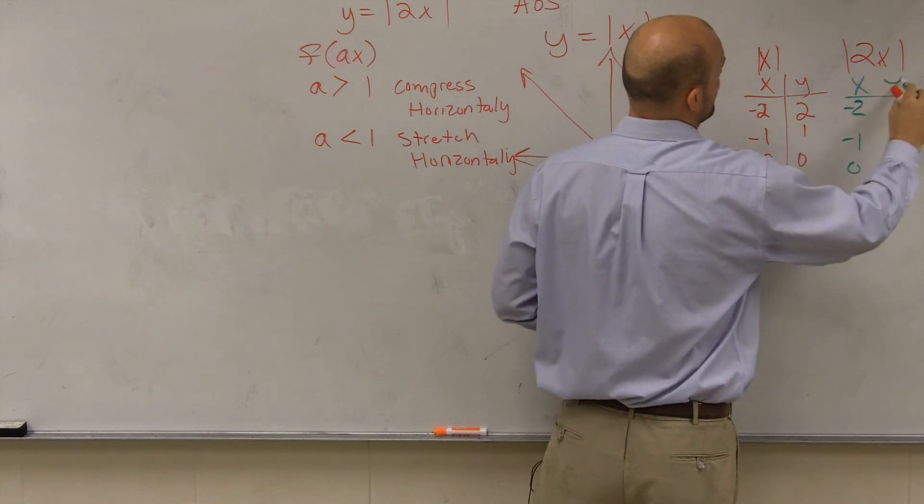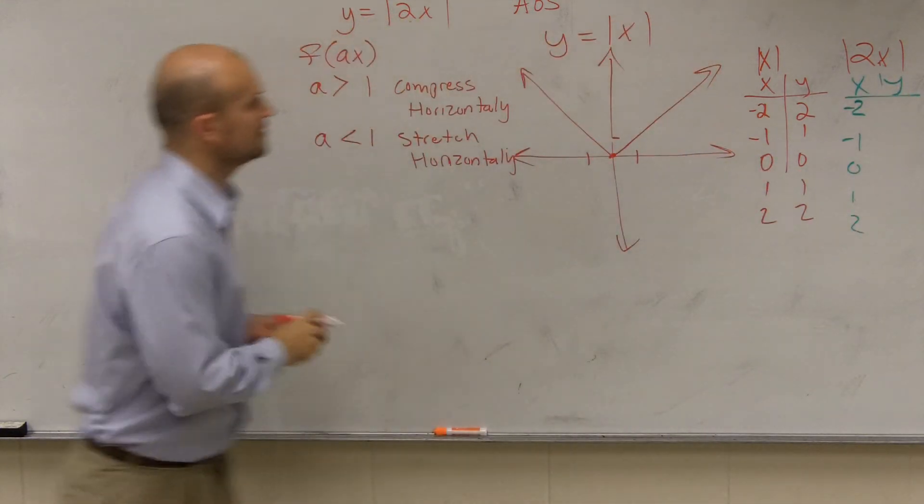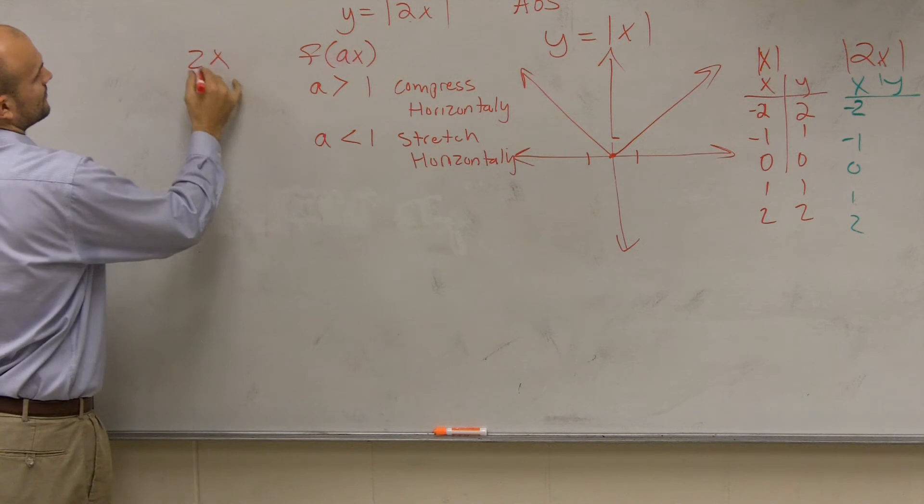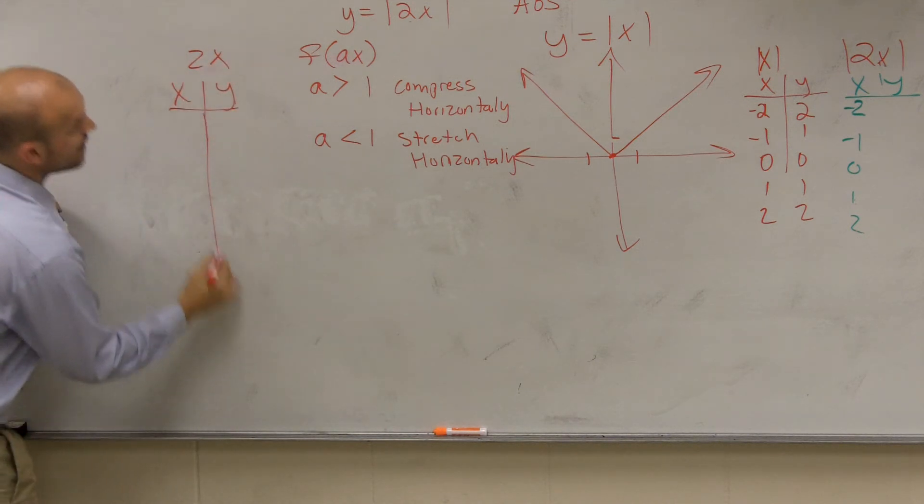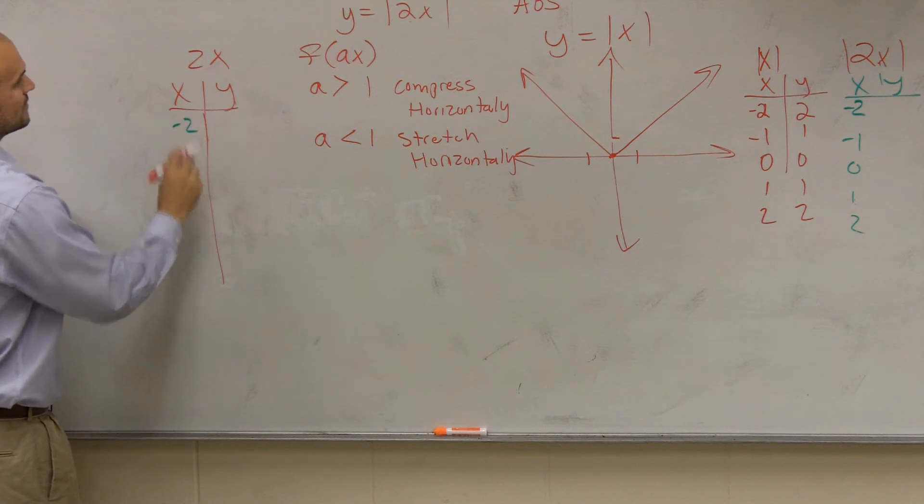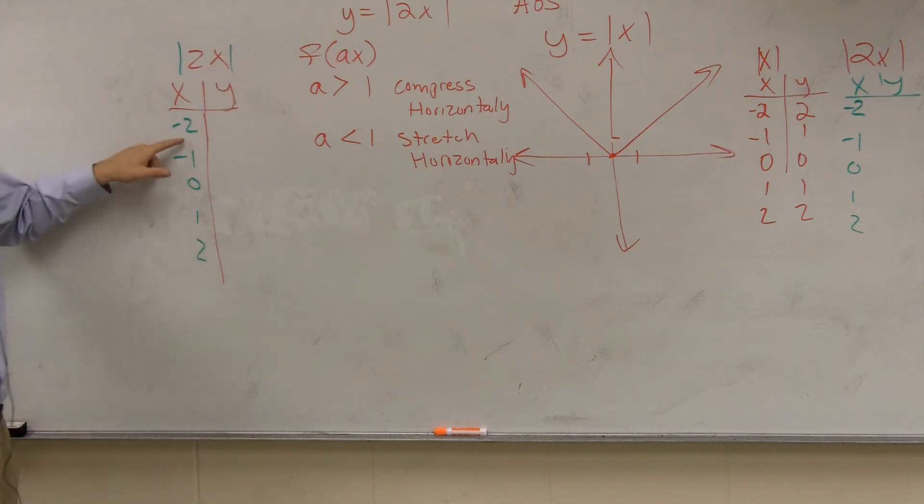However, now, I'm kind of getting out of my video. If I do 2x, we have x and a y. Now, I'm going to do negative 2, negative 1, 0, 1, and 2.